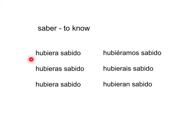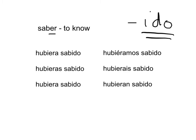Otro verbo: saber, to know. Hubiera sabido, hubieras sabido, hubiera sabido, hubiéramos sabido, hubieras sabido, hubieran sabido. Como su verbo que terminan en -er, se forman los participios de pasado con las terminaciones -ido. Es igual con todos los verbos regulares que terminan en -er, o los que terminan en -ir también.